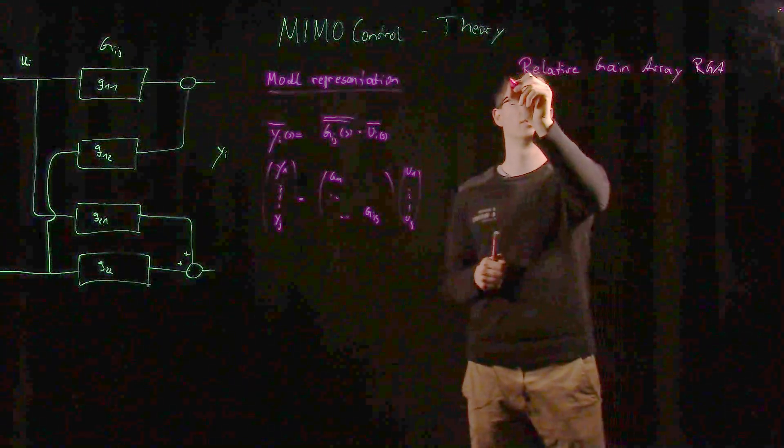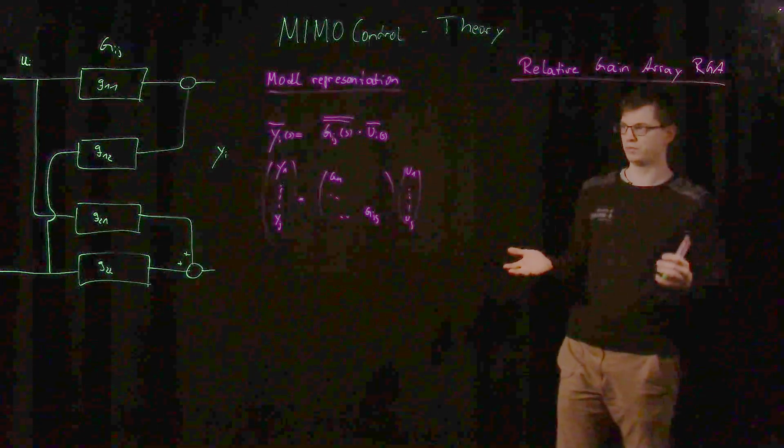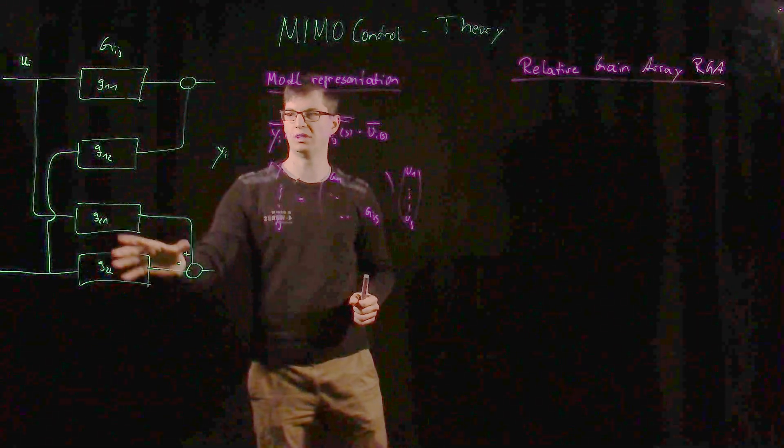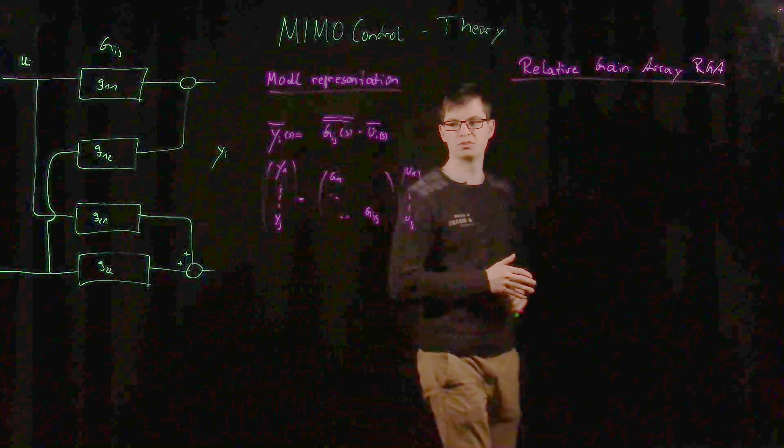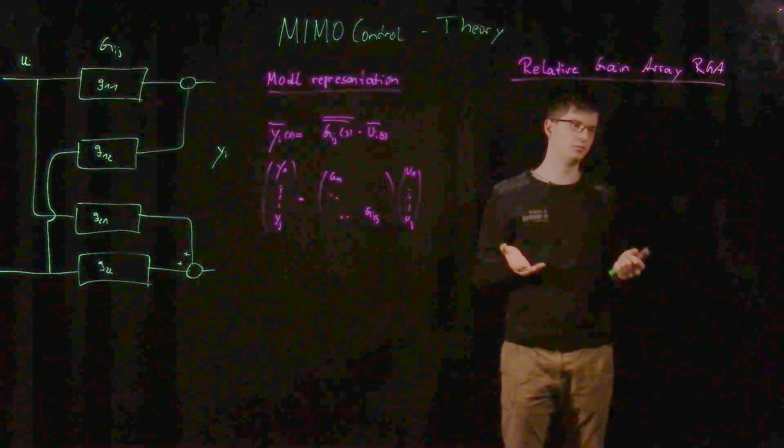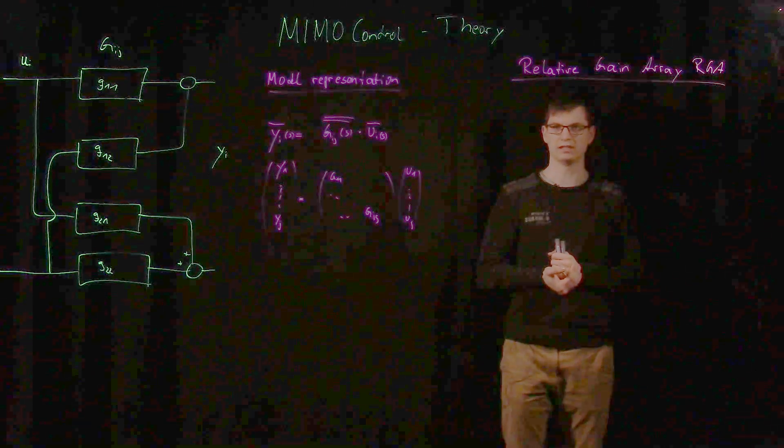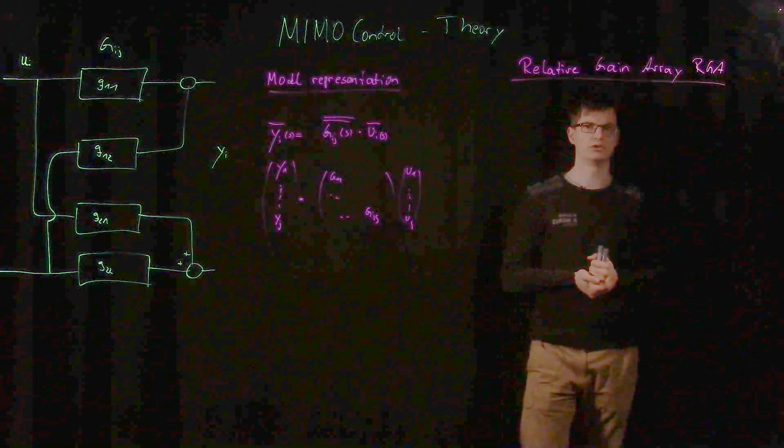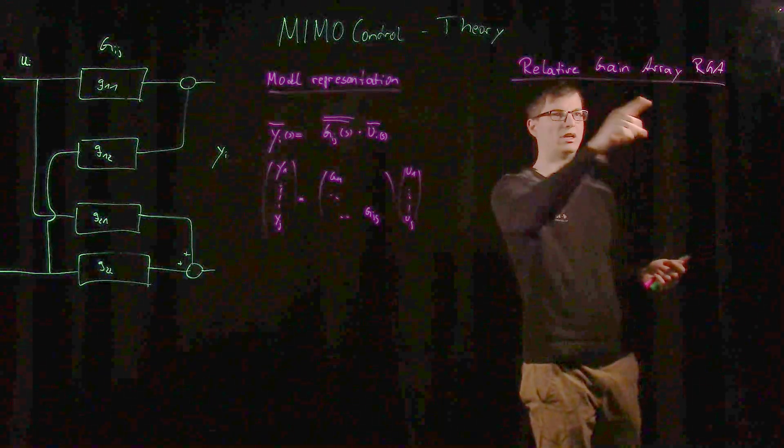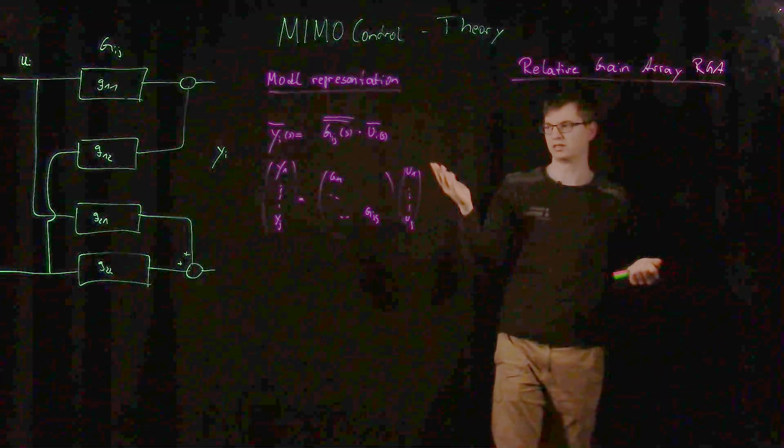Relative Gain Array, or in short, RGA. What is it? As I mentioned before, we need some kind of measure of how strong this interaction between both control loops actually is. Therefore, multiple ways exist. There are a couple of matrices and other methods.